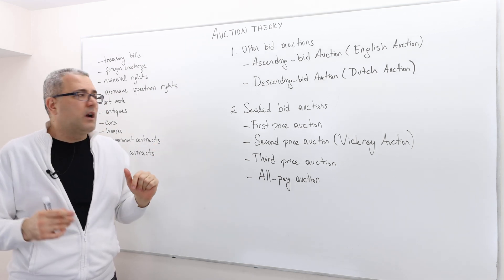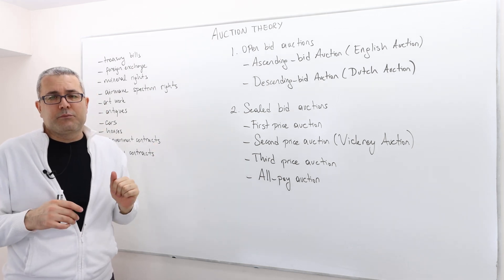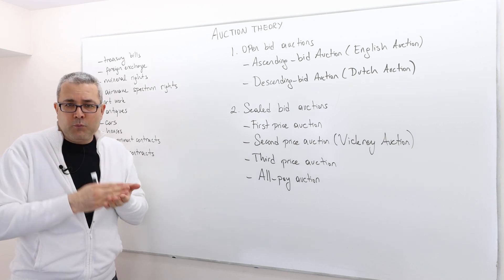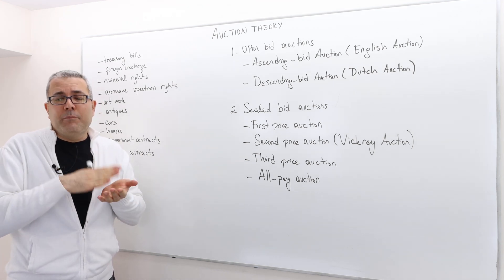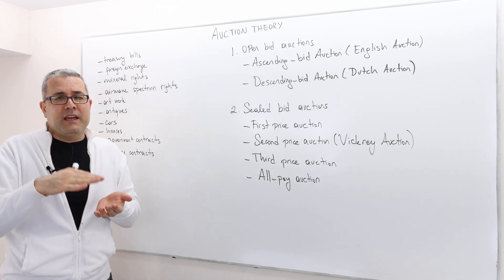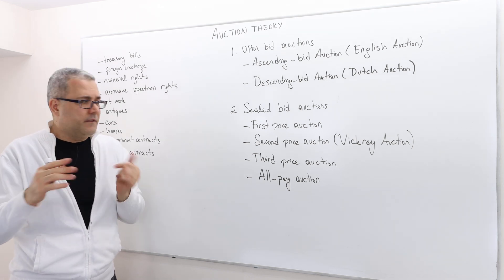The third price auction. Well, again, very similar to the second price auction. The winner is the highest bidder and the winner actually pays the third highest bid.